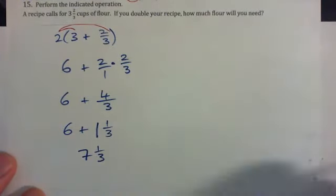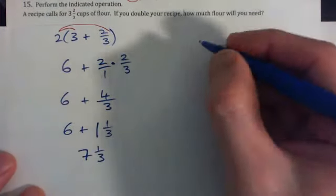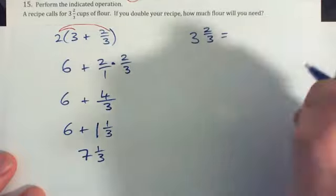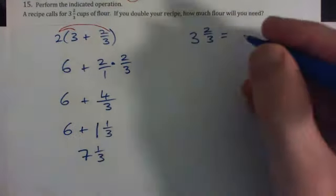There's another way of doing it. If we didn't want to use the distributive property, we could have converted the three and two-thirds into an improper fraction.